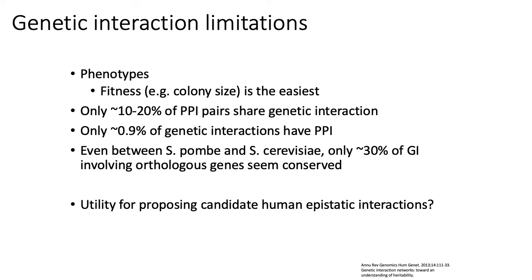There is relatively small overlap between protein-protein interaction networks and genetic interaction networks. In yeast, studies find only about 10 to 20% of PPI pairs actually share a genetic interaction. Genetic interaction networks and PPI networks measure different things, but one might expect more than 10 to 20% overlap. The proportion is even worse when looking at genetic interactions that have supporting PPI interactions in yeast.